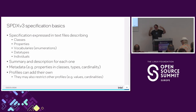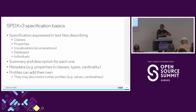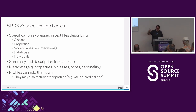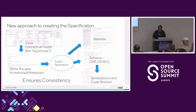We have metadata for each element — for example, the fact that a file has a name is represented there. A file or package has a download location which may be optional, so we have cardinality and the type is a URI. Everything in the specification is strictly described this way, and profiles can add their own elements.